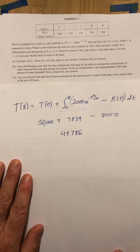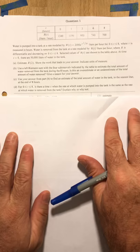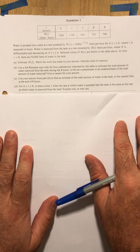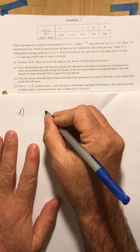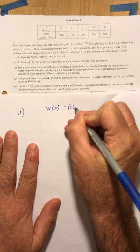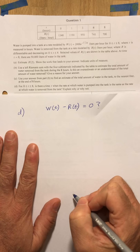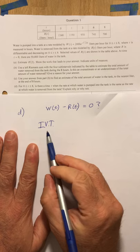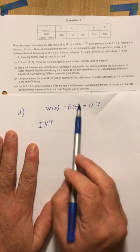All right, our last question is, is there a time at which the rate at which the water is pumped into the tank is the same as the rate at which the water is removed from the tank? So what we really want to think about here is what is the difference between W of T and R of T, and is that ever equal to 0 at any point? This is a good time to use the intermediate value theorem. Because if I can show that there's one place where this is positive and one place where this is negative, then that's going to guarantee that this is equal to 0 at least once.